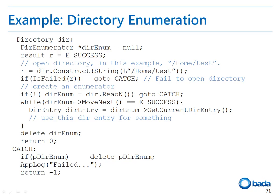This example acquires the file and directory names in a directory by using the directory class. Specify the directory name, construct the directory, and get the enumerator using the readn function of the directory. The getCurrent function of the enumerator returns the directory entry, which contains various types of file and directory information.